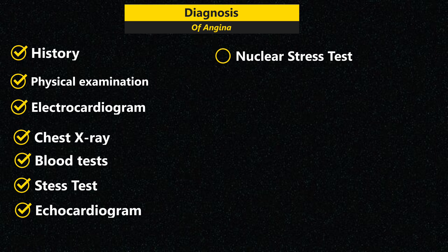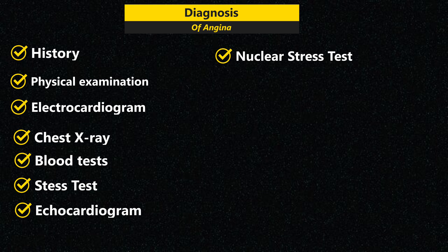A nuclear stress test helps measure blood flow to the heart muscle at rest and during stress. It is similar to a routine stress test, but during a nuclear stress test a radioactive tracer is injected into the bloodstream. A special scanner shows how the tracer moves through the heart arteries, and areas that have little or no amounts of the tracer suggest poor blood flow.